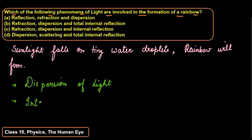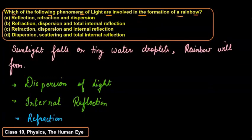Internal reflection, dispersion, refraction - the bending of light at each angle. So refraction. These three phenomena participate when rainbows are formed.